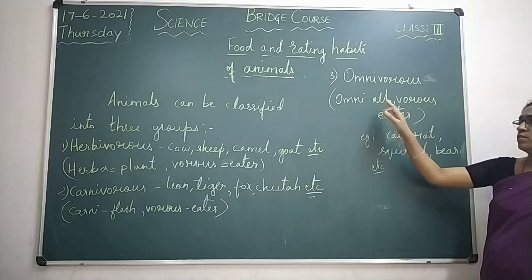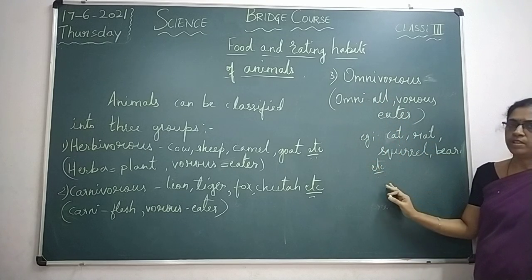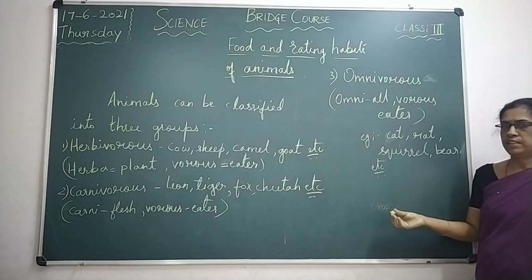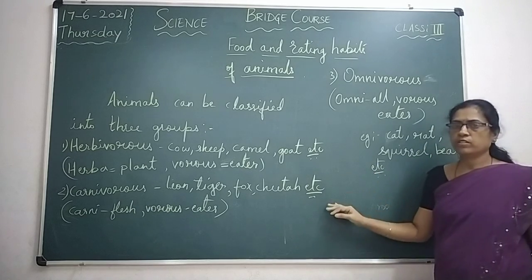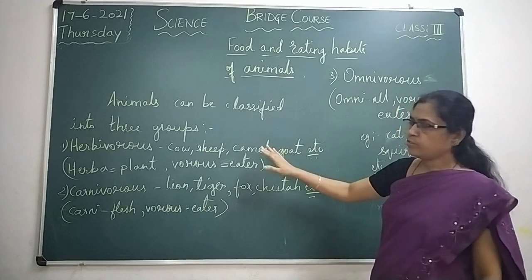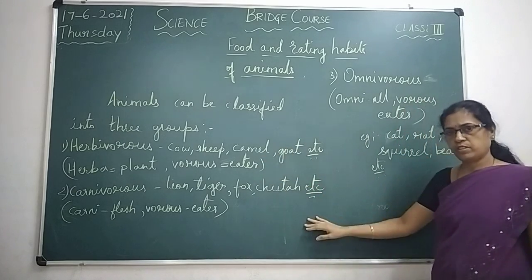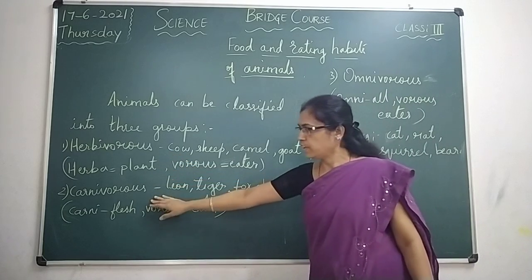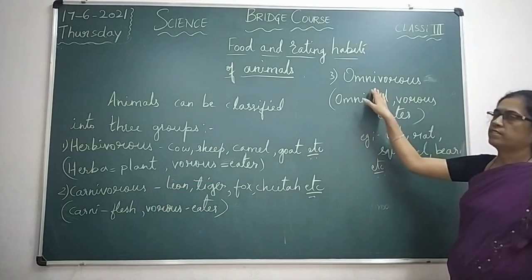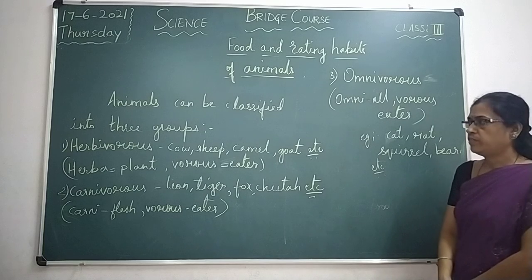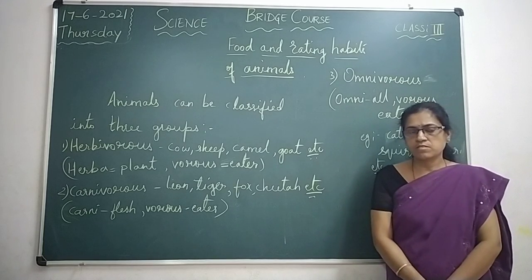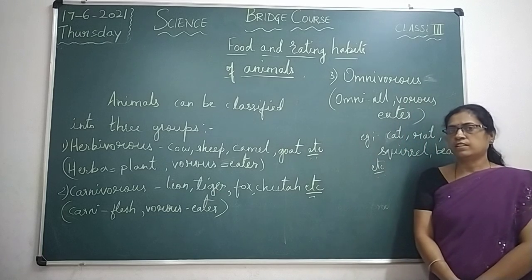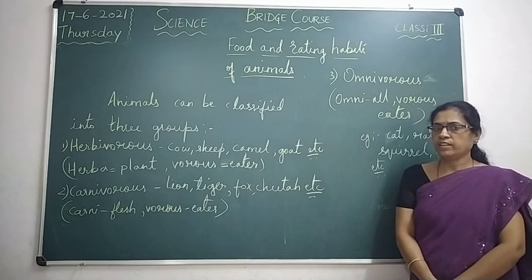Omni means all. So depending on the eating habits of animals, they are classified into three groups: herbivores, carnivores, and omnivores. I hope you have understood. So let us discuss the next topic in the next class. Thank you.